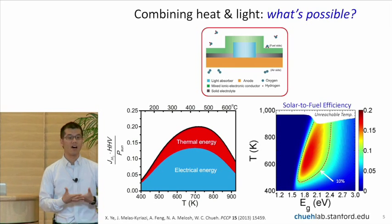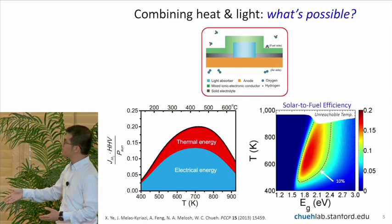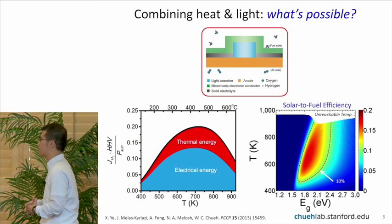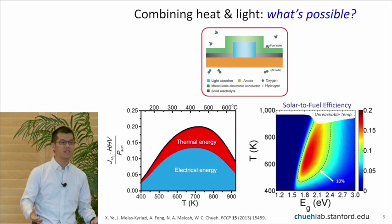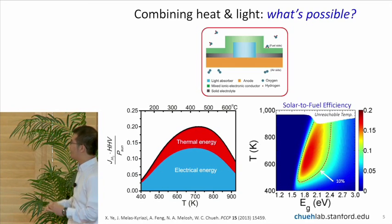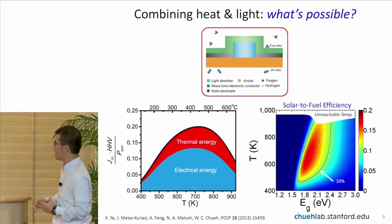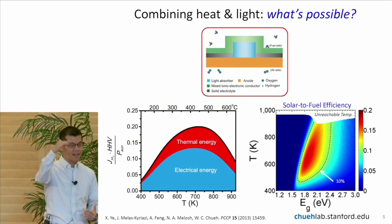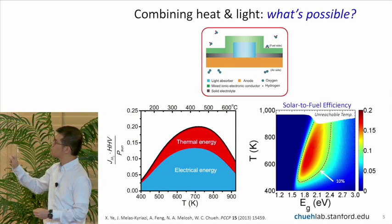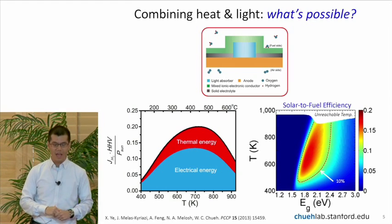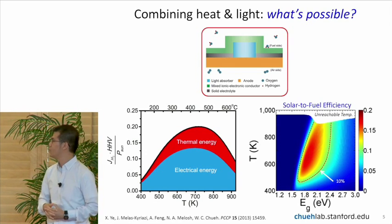We also looked at as a function of material properties. So the plot on the right, it's a parametric plot of the operating temperature in Kelvin and the band gap of the material. And the color shows you the predicted efficiency of the system accounting for various loss terms. And this contour plot shows that at intermediate band gap approximately 1.8 to 2.4 electron volts, and at elevated temperature, 700, 800 Kelvin, you can actually hit the sweet spot of the solar to fuel efficiency. And we estimated upwards of 20% as possible,